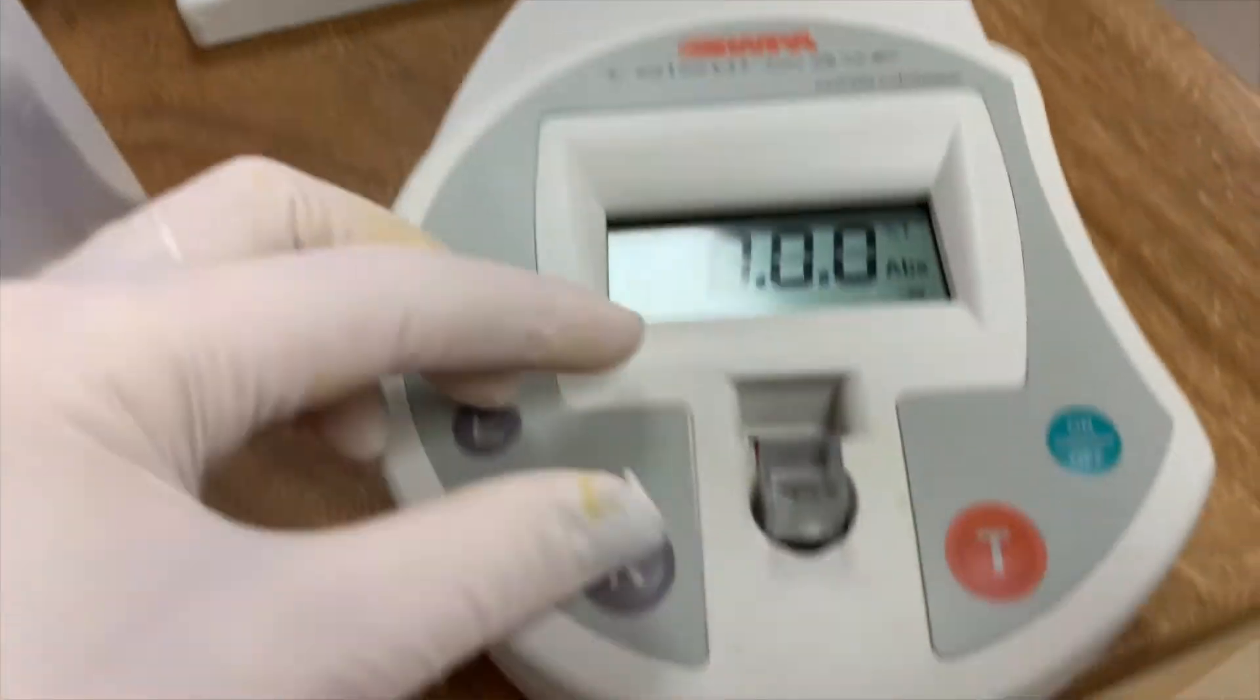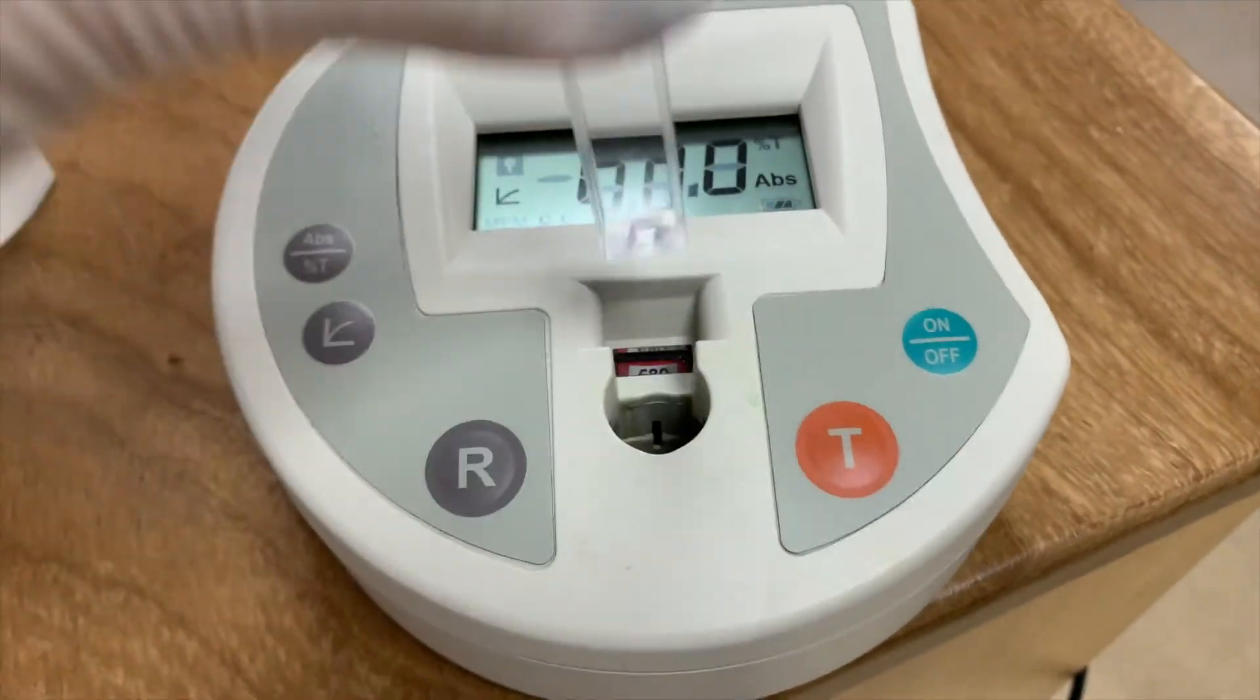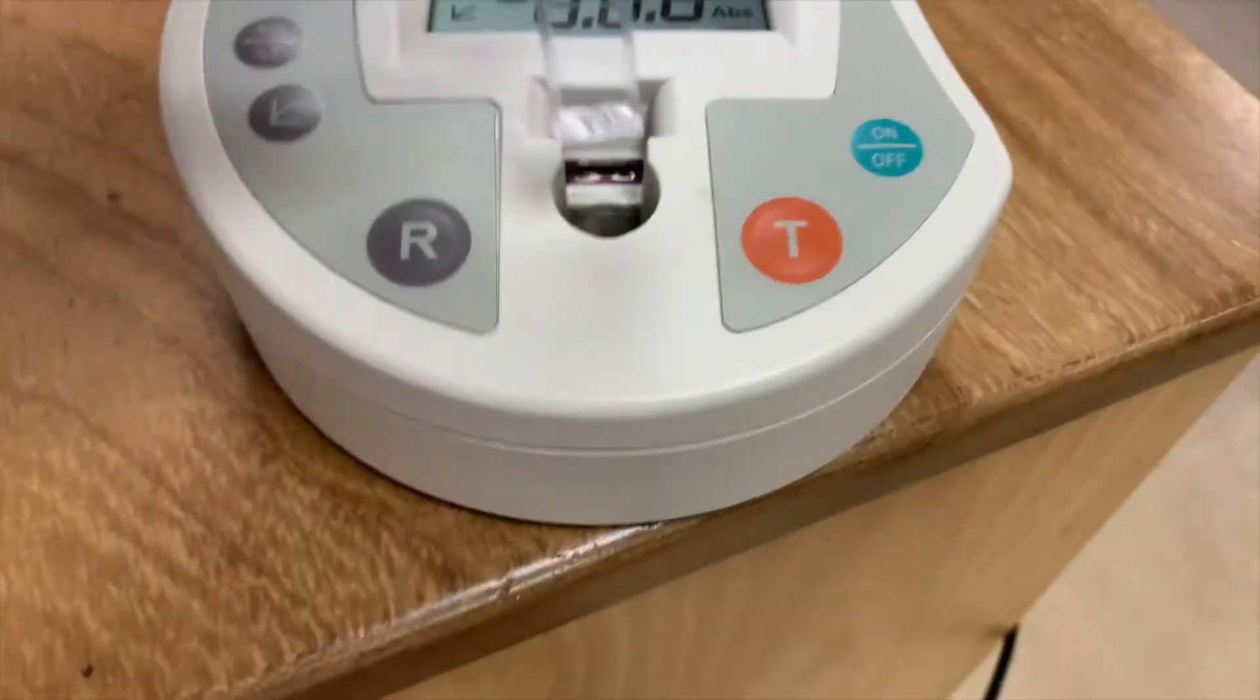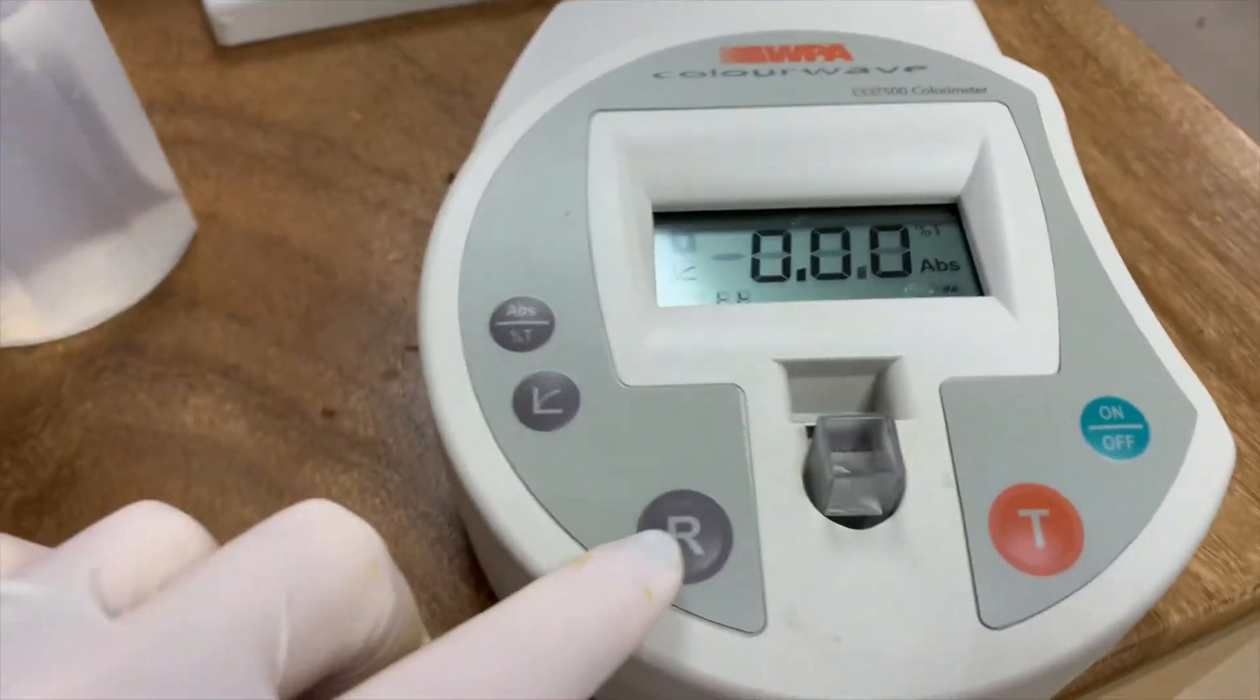Seeing as the colored solution you are testing is blue, set the colorimeter to red light and use distilled water as a blank to set the reference for absorption.